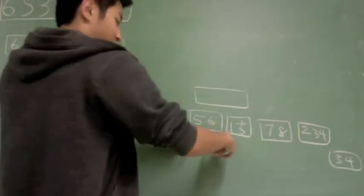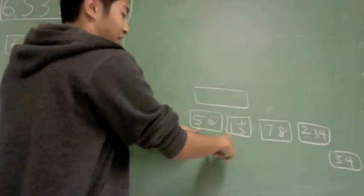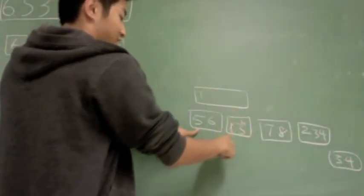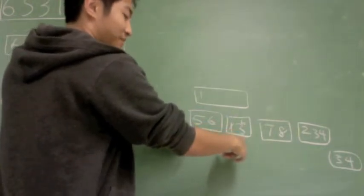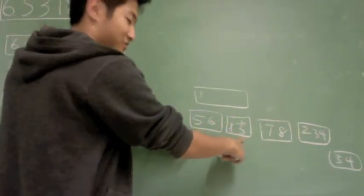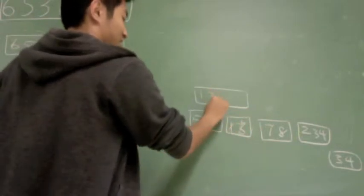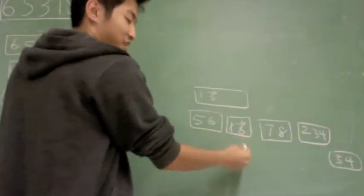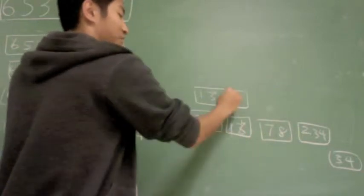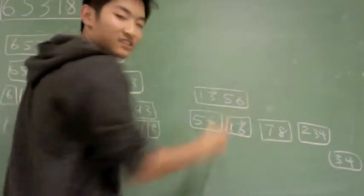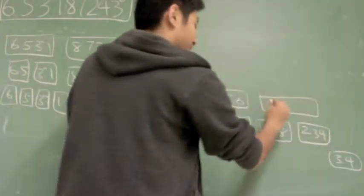So you look at the first element of each list, and you choose the one that's smallest. So here it's 1 — then you cross that out and compare the first one here, which is now 3b, with the first one here, which is still 5. This crosses out. And then once you're left with an empty list, you just append the rest. That's how merge works. Similar process here.